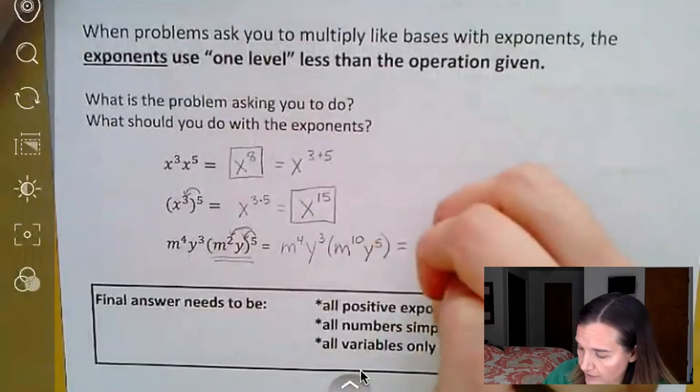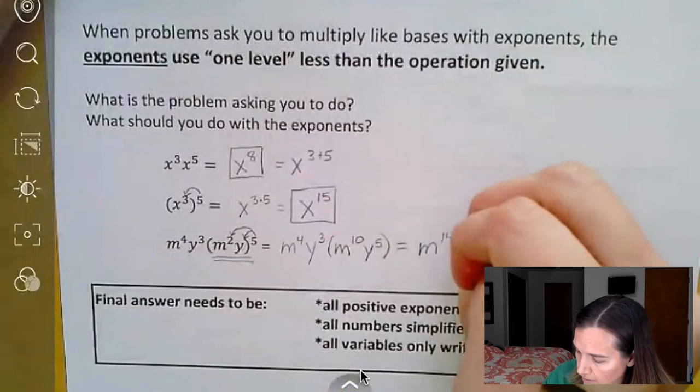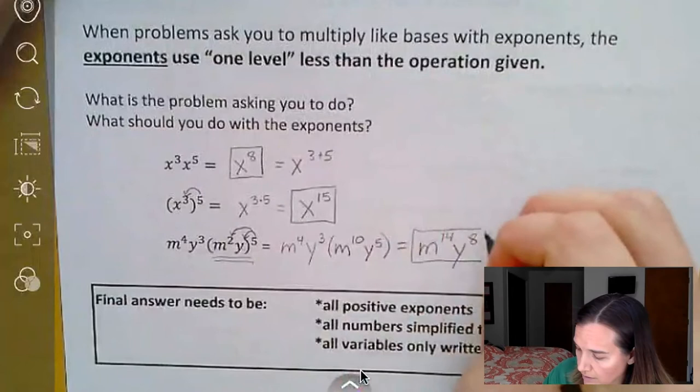So our final answer here, m to the four plus 10, 14. Y to the three plus five is eight. And then that becomes our answer.